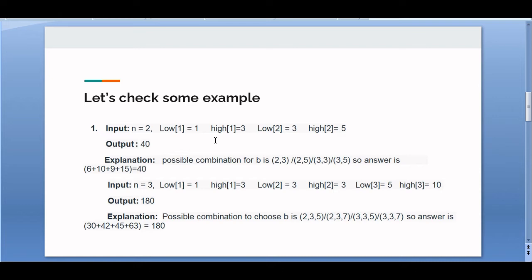In the second example, n is 3. The first range is 1 to 3 (primes: 2 and 3), the second range is 3 to 3 (only prime: 3), and the third range is 5 to 10 (primes: 5 and 7). The valid combinations are [2,3,5], [2,3,7], [3,3,5], and [3,3,7]. The sum is 30 + 42 + 45 + 63 = 180.